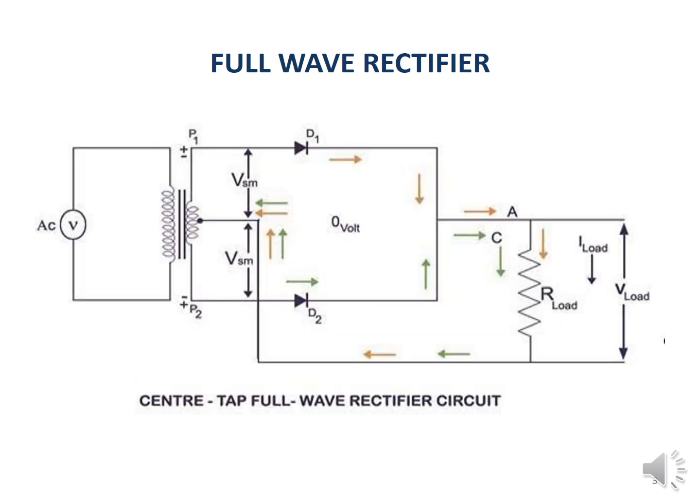This is the circuit diagram of a single-phase center-tap full wave rectifier. This construction consists of: first, the voltage is given to the step-down transformer. It is a center-tap transformer, and it has three output terminals and two input terminals.